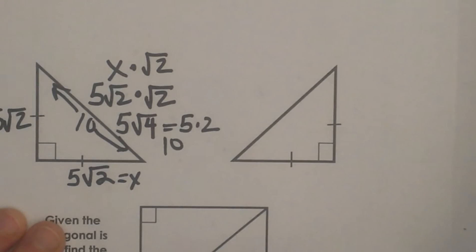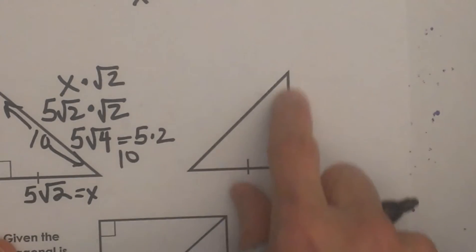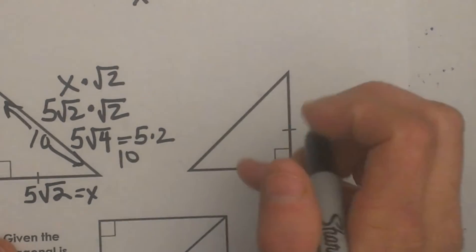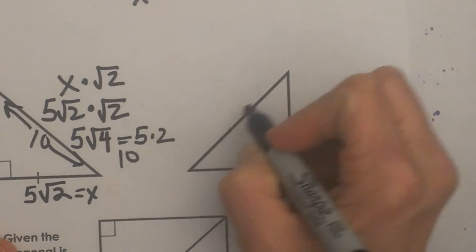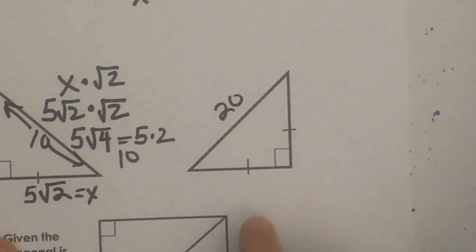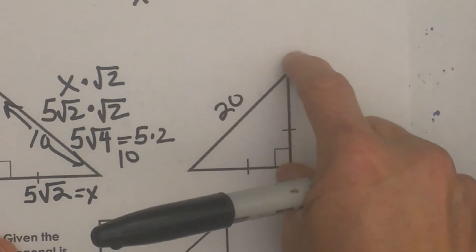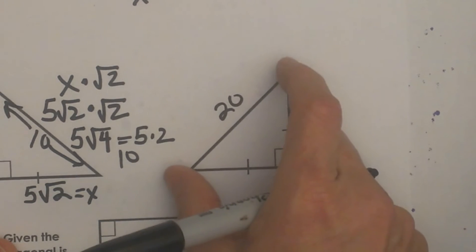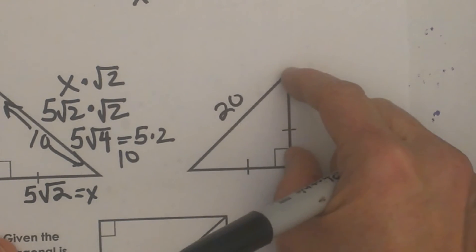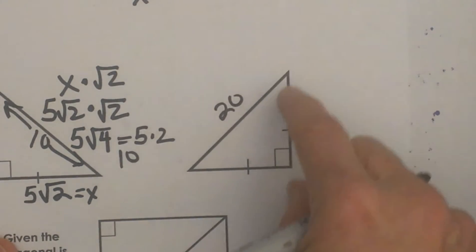Now let's work this one backwards. Instead of being given a leg, we are given the hypotenuse. Let's say the hypotenuse measures 20 and we have to figure out what the length of the leg is. Think about that — which is longer, the hypotenuse or the leg? The hypotenuse is longer, so we are going to have to make the value smaller.